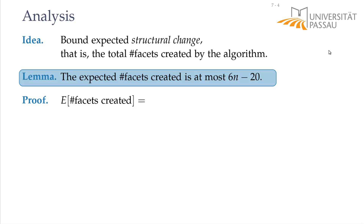Remember that the first four vertices we picked were not random — we chose four specific vertices that are not coplanar. Randomization only kicks in after the fourth vertex. In the very first step we pick four vertices and create their convex hull, which is just a pyramid with four triangular faces.